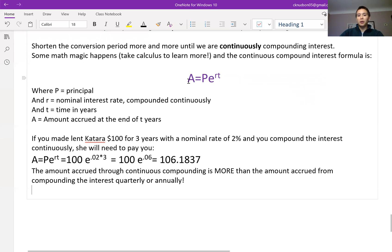So we take this formula in purple here and we're going to use P equals $100, r is 0.02 or 2%, and she's borrowing it for three years so t is 3. We crunch this number in our calculator and we get 106 dollars and 18.37 cents.